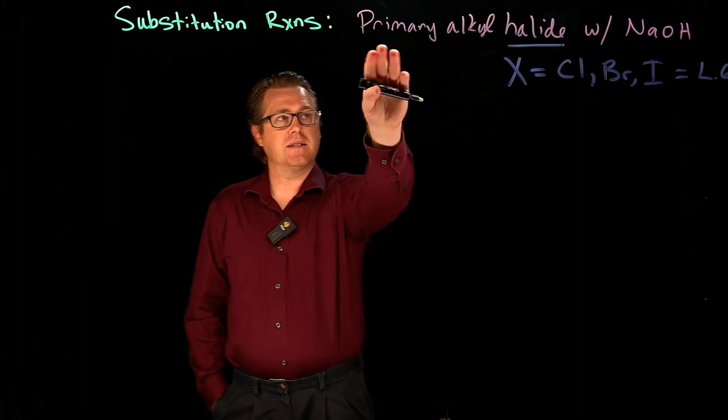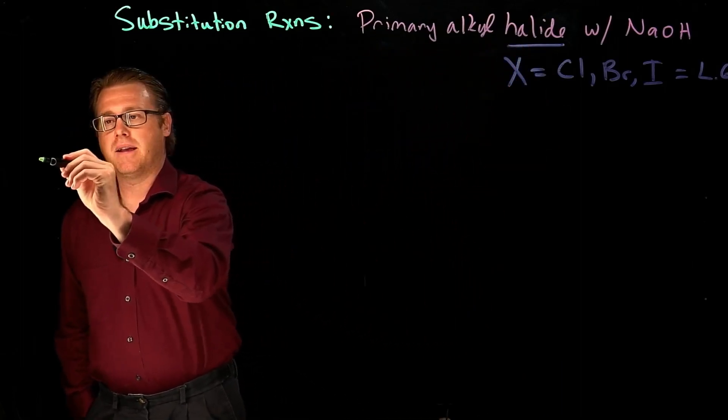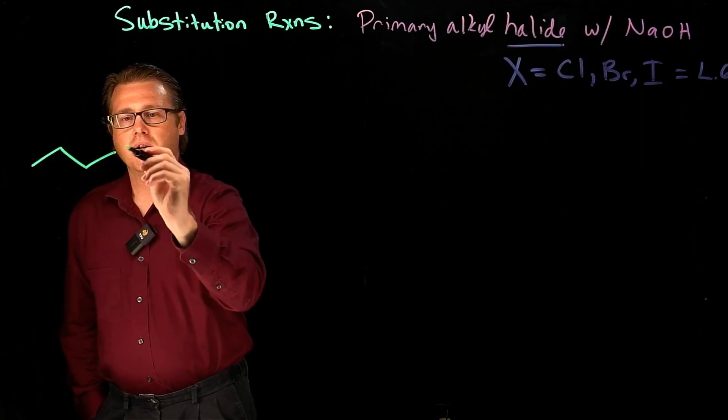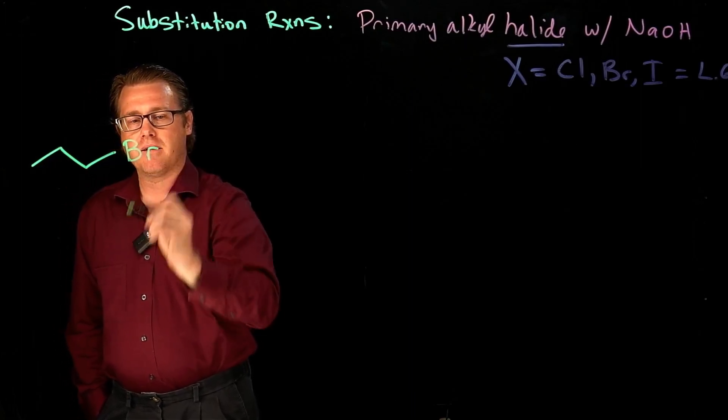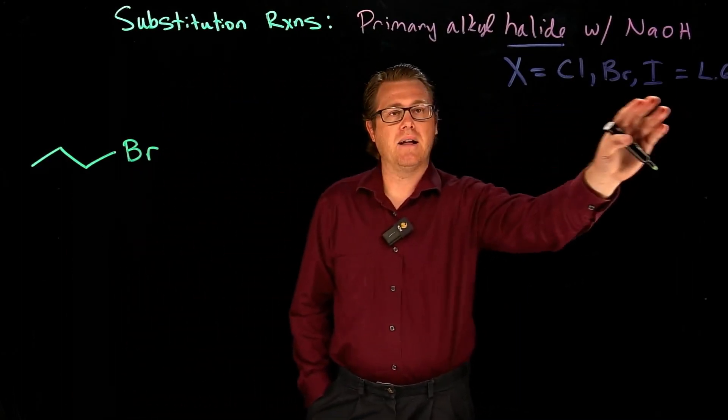And the first one that we're going to look at is a primary alkyl halide. So what would a primary alkyl halide look like? We could say, okay, right there, that's a primary alkyl halide. Now, I could have used any of these three halogens.